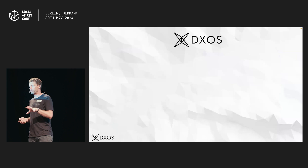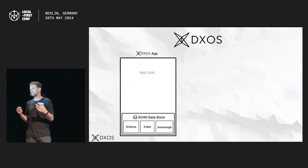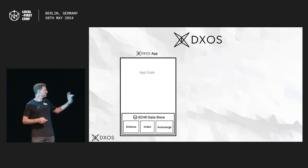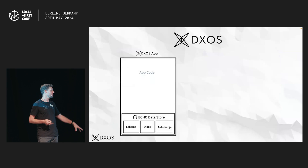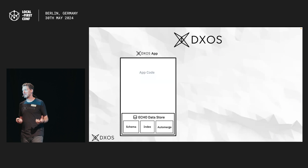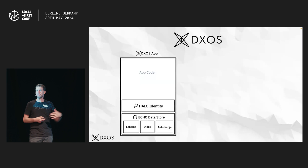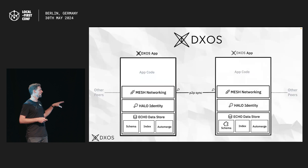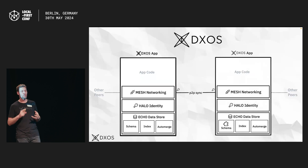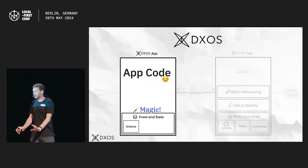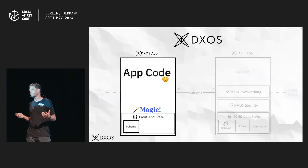A little primer on DXOS before I show you an example app. DXOS is basically an all-in-one framework for building local-first apps — it has something for all the problems you're going to run into, with the asterisk that not all problems are solved yet. There is a data store called Echo, built on top of AutoMerge, which also uses Effect Schema. It builds an index so you can search across a whole bunch of AutoMerge objects. It solves identity with public-private-key encryption, and it provides the networking layer, syncing via peer-to-peer over WebRTC and WebSockets. For the app developer, it's like having magical front-end state that just synchronizes across all your applications — you don't have to think about it.